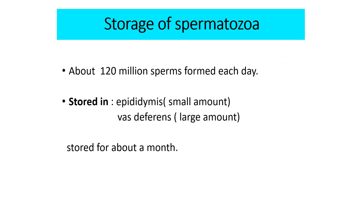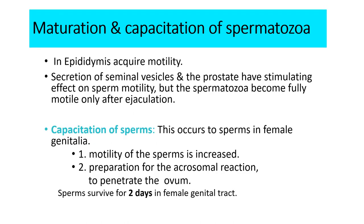About 120 million sperms are formed each day. A small quantity is stored in the epididymis, but most are stored in the vas deferens and ampulla of the vas deferens. They can remain stored maintaining their fertility for about a month. Sperms require several days to pass through the epididymis. In the early part of the epididymis, sperms are non-motile, but within 18–24 hours after entry into the epididymis they develop motility. Secretions of the seminal vesicles and the prostate have a stimulating effect on sperm motility, but spermatozoa become fully motile only after ejaculation.